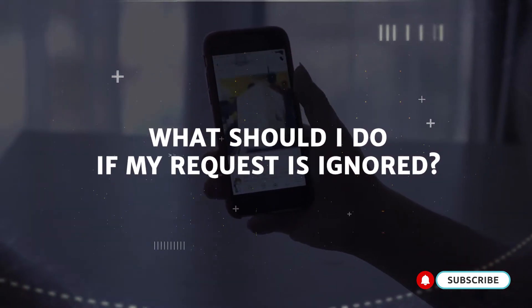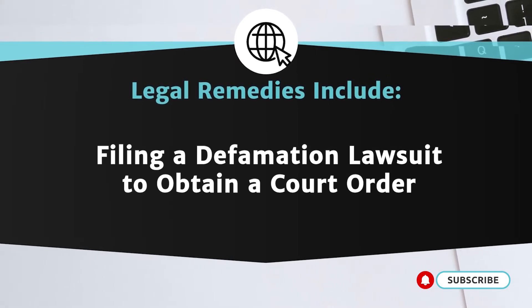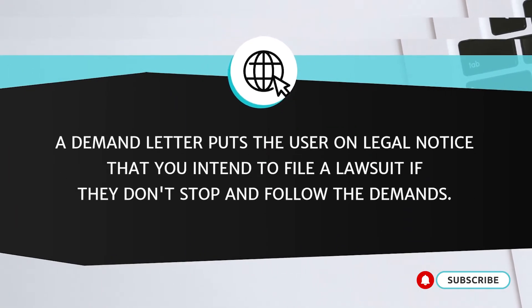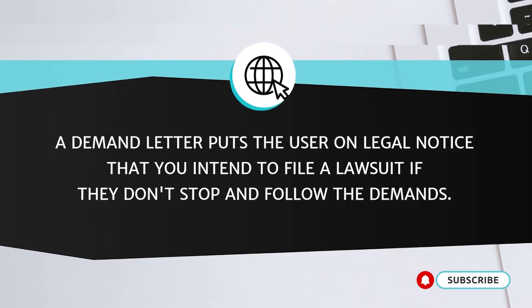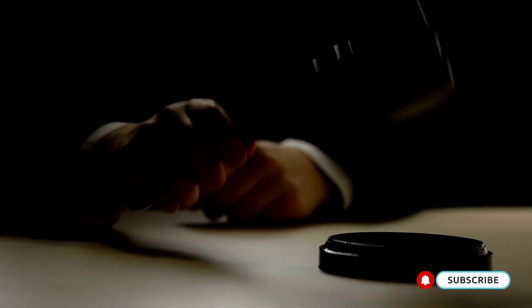If Facebook reviews the flagged content and determines it does not violate their community standards, you may need to pursue legal remedies such as sending a demand letter or filing a defamation lawsuit to obtain a court order to remove the content. If you know who is defaming you, sending a demand letter from an attorney is a great way to get them to stop and remove the content. This puts the user on notice that you intend to file a lawsuit if they do not comply. If a demand letter doesn't work, filing a lawsuit to obtain a court order is your next step, and it is an extremely effective way to get the content removed.